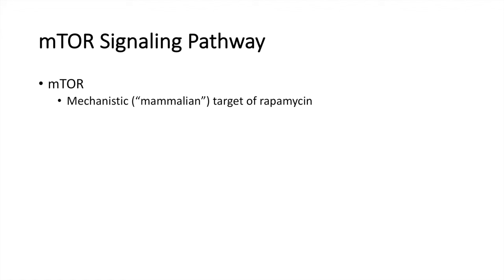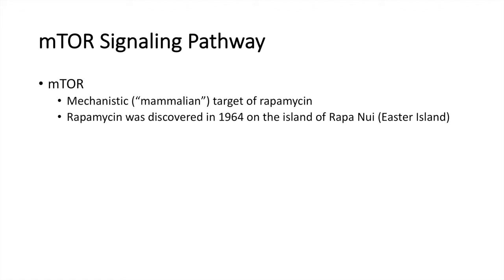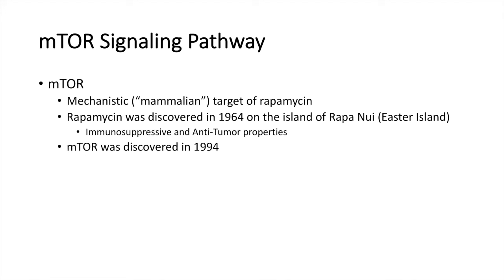So what is mTOR? mTOR is the mechanistic, or mammalian, target of rapamycin. Rapamycin was first discovered in 1964 on the island of Rapa Nui, also known as Easter Island, and was found to have immunosuppressive and anti-tumor properties. It wasn't until 1994 that researchers actually discovered mTOR — so it took about 30 years to figure out what rapamycin was actually targeting within the cell.